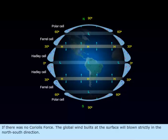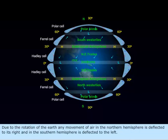If there was no Coriolis force, the global wind belts at the surface would blow strictly in the north-south direction. Due to the rotation of the Earth,